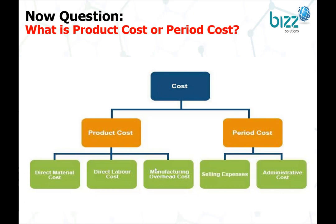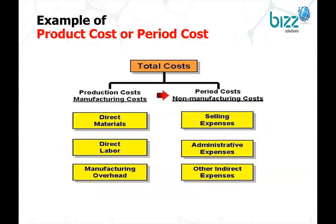The product cost is the manufacturing cost — which includes direct material — and the period cost includes selling expense, administrative expense, and other indirect expenses like interest and other taxes.